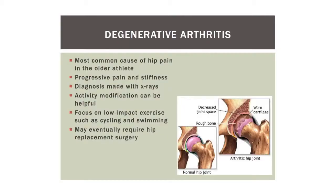Degenerative arthritis is probably one of the most common causes of hip pain, particularly in older athletes who remain active. Basically, it's a wearing out of the joint — the cartilage starts to wear down, causing groin pain, hip pain, activity problems, and stiffness. The joint doesn't move normally and really interferes with the ability to exercise. This diagnosis is usually made on plain x-rays. Activity modification can be very helpful — switching from weight-bearing activities that cause pain to lower-impact activities like cycling and swimming. If that doesn't help, a hip replacement is often necessary.